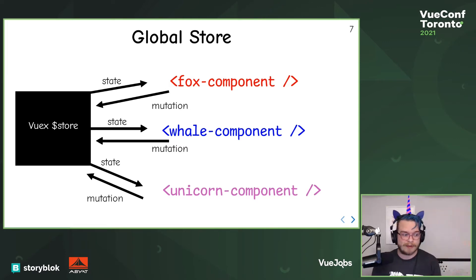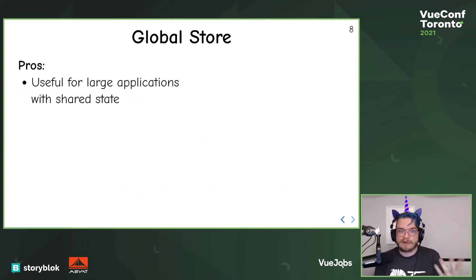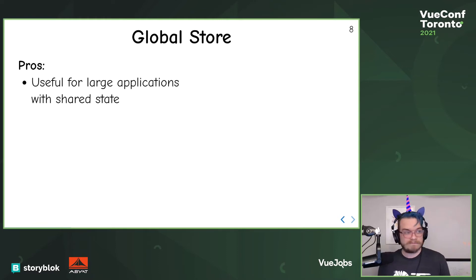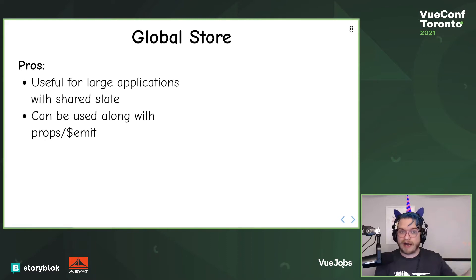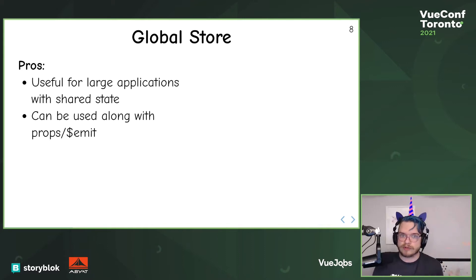Pinia does this even better because Pinia is modularized, so you're only pulling in the bits that you need. The pros: it's useful for large applications with shared state. You can pair this with props and emit — your page brings in the store information and passes it as a prop, so you still get those nice reusable, testable components coupled with a global data store.